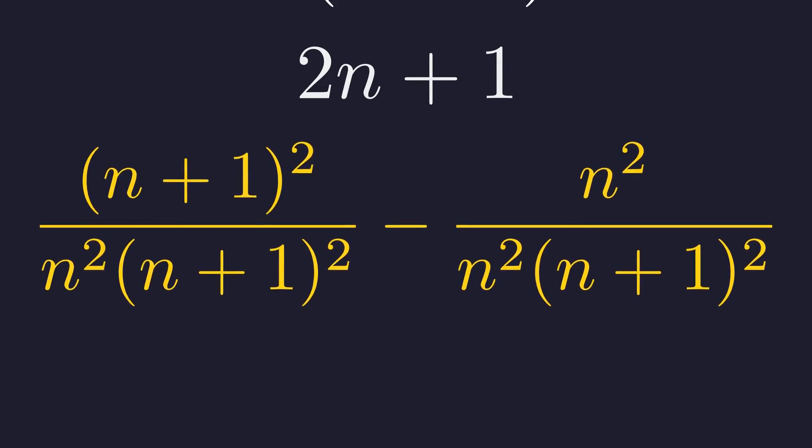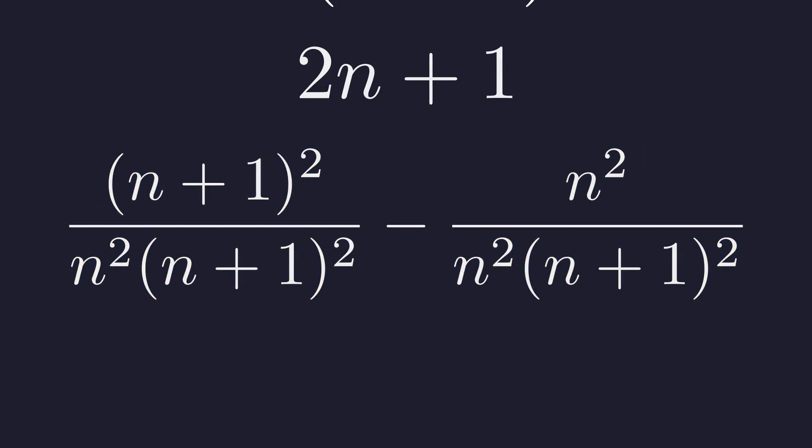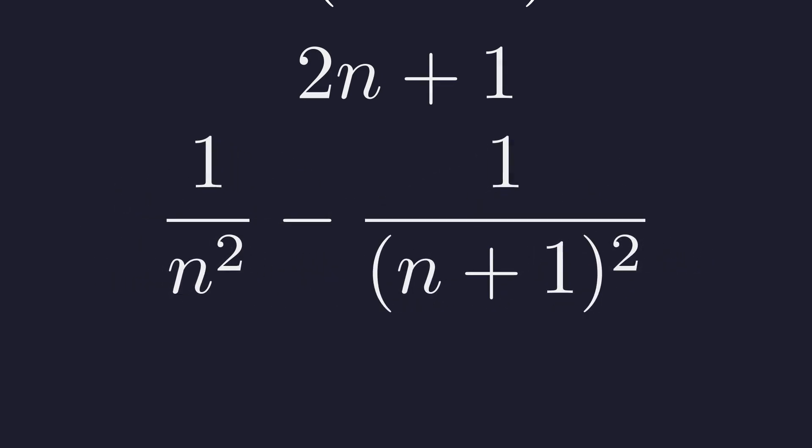The square of n+1 cancels in the first term, and n² cancels in the second. This leaves us with an incredibly simple result: the complex fraction is just the difference of 1/n² and 1/(n+1)². Beautiful, right?